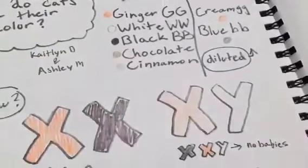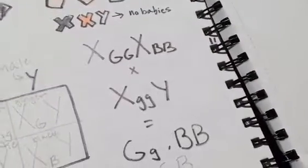So a ginger and black tortoiseshell would have both colors be dominant: homozygous big G, homozygous big B.